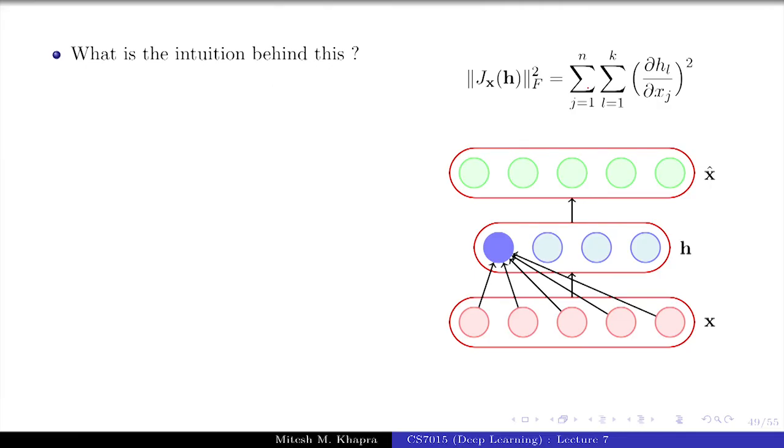Tell me what is the intuition behind this. Remember this term is added to the loss function and you are trying to minimize the loss function. That means you want this term to go to zero, you want the Frobenius norm to be zero. Ideally, of course, that will not happen because there is always a trade-off between L(theta) and omega(theta). If you make it zero, then L(theta) would be very high.